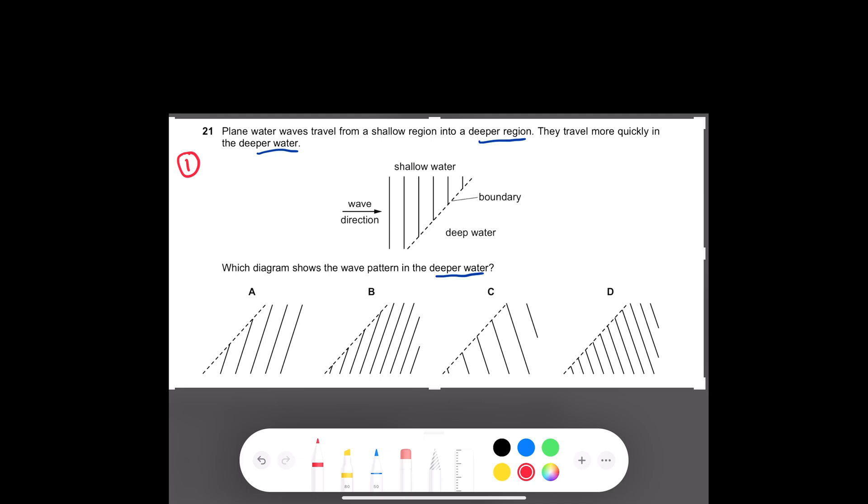The spaces between the wave fronts increases as well. The only thing which is constant is the frequency. To answer the question we have to draw an incident ray reaching the boundary.